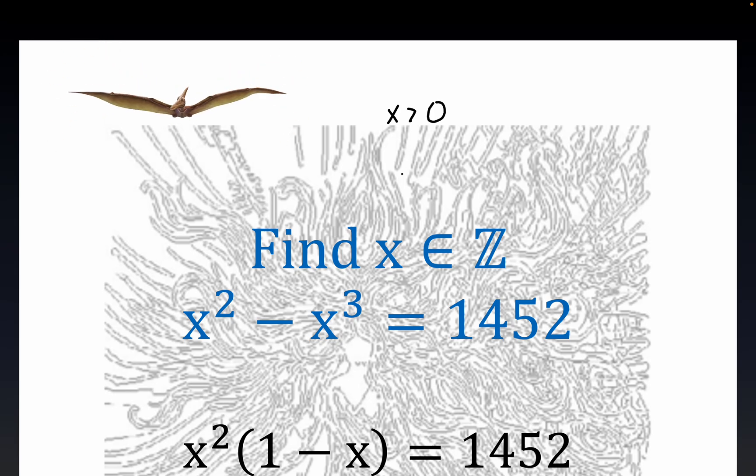But let's just assume that x is a positive integer solution to this. You can see by inspection that this would imply x squared minus x cubed is less than zero. There's no doubt about that. If x is an integer and x is positive, this always holds.